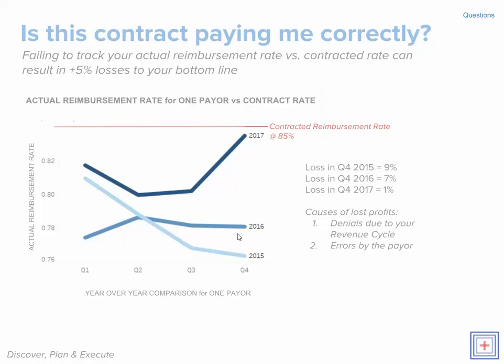In 2015 Q4 there's an estimated loss of 9% to the bottom line. In Q4 2016 there's an estimated loss of 7% to the bottom line. Then in 2017 improvements were made and there's an estimated loss of only 1% to the bottom line.